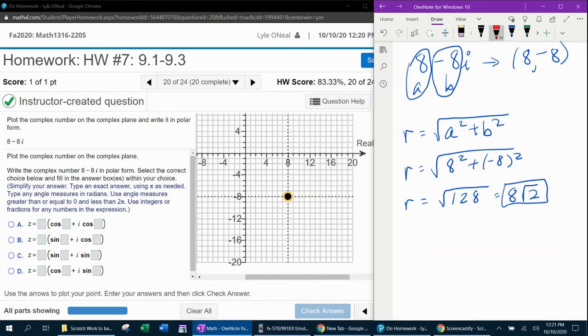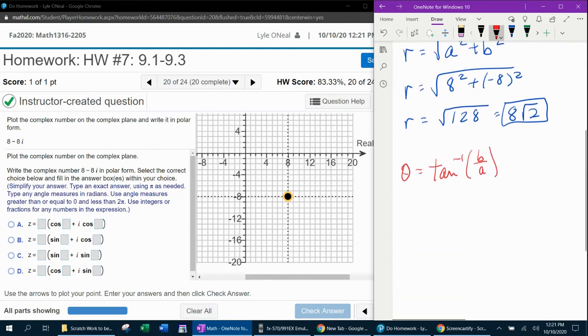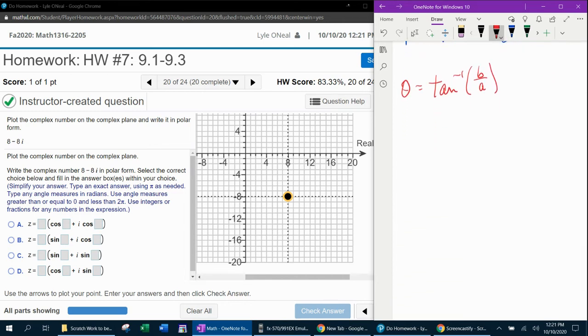And now for the angle. The formula for theta is the inverse tangent of B over A. And so our theta is going to be the inverse tangent of negative 8 over 8, which will simplify to the inverse tangent of negative 1. And in radians, that is negative pi over 4.